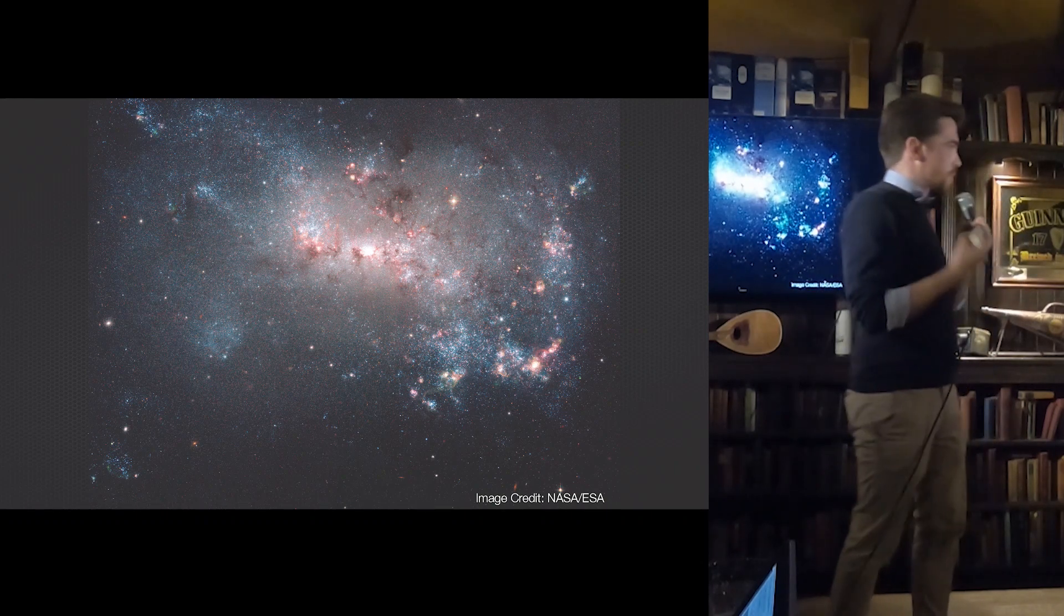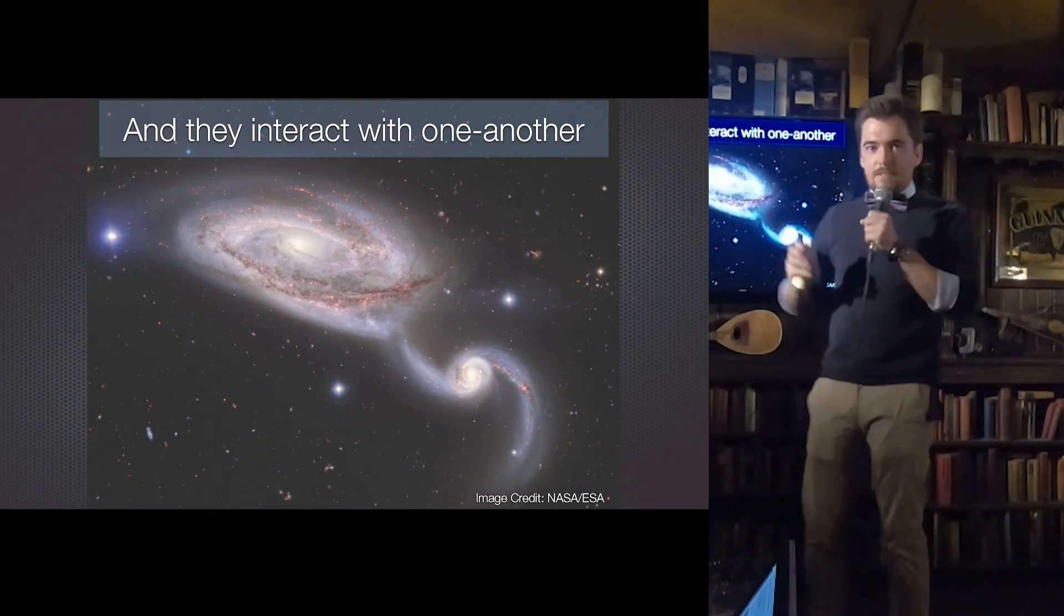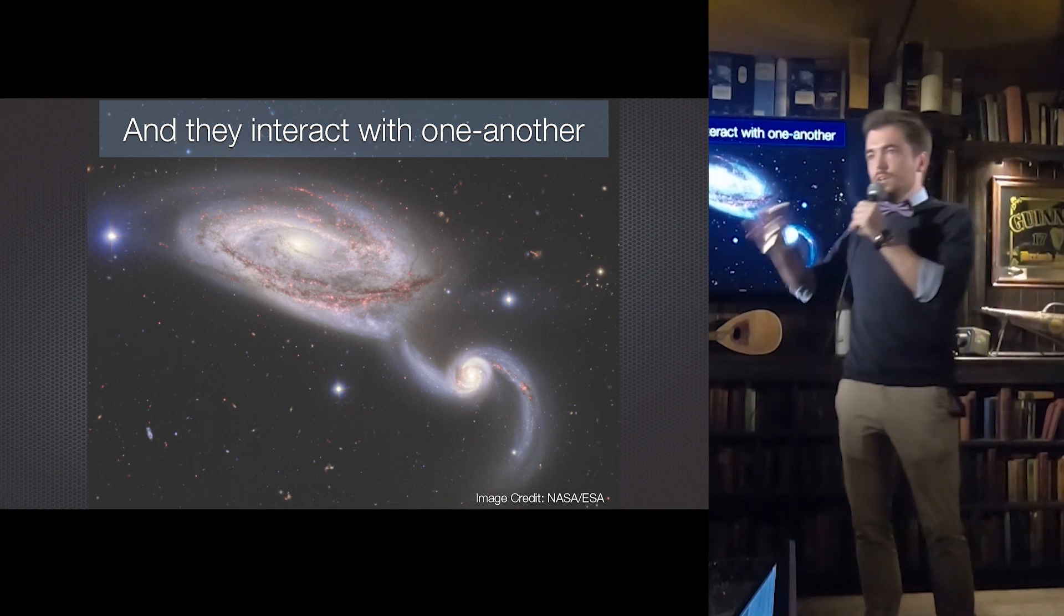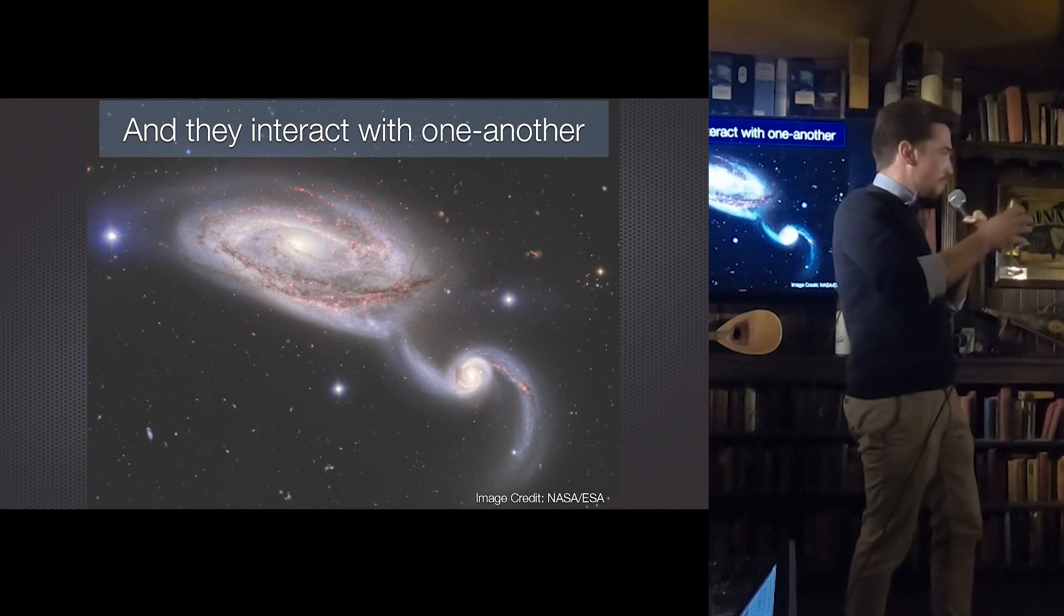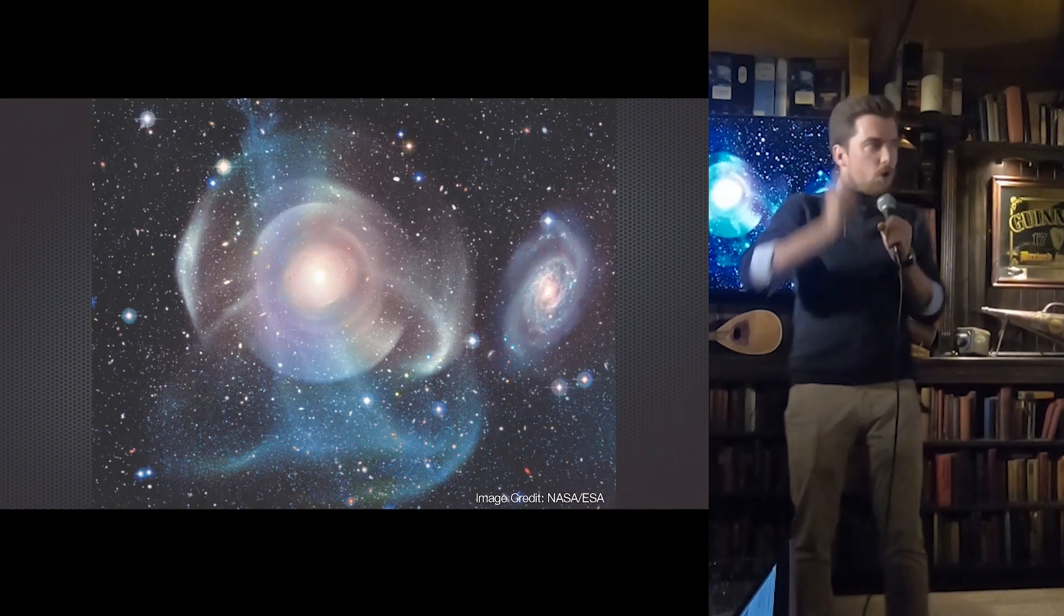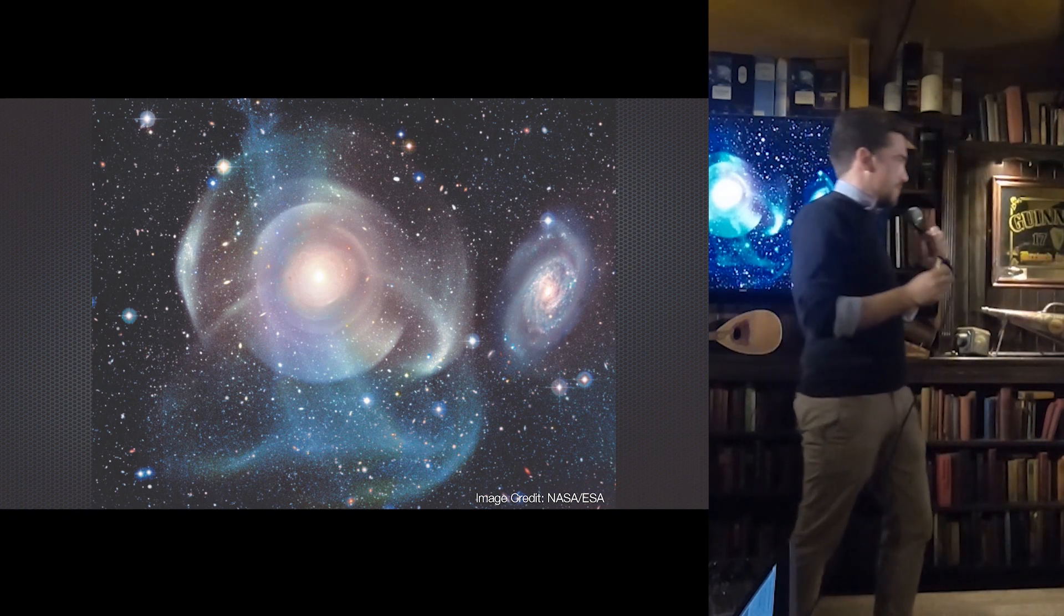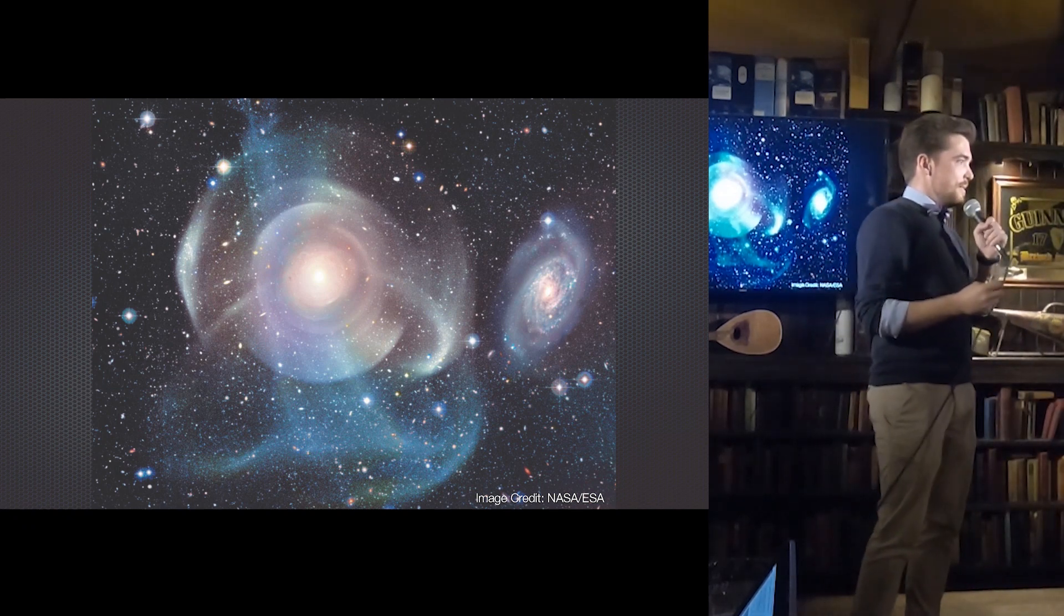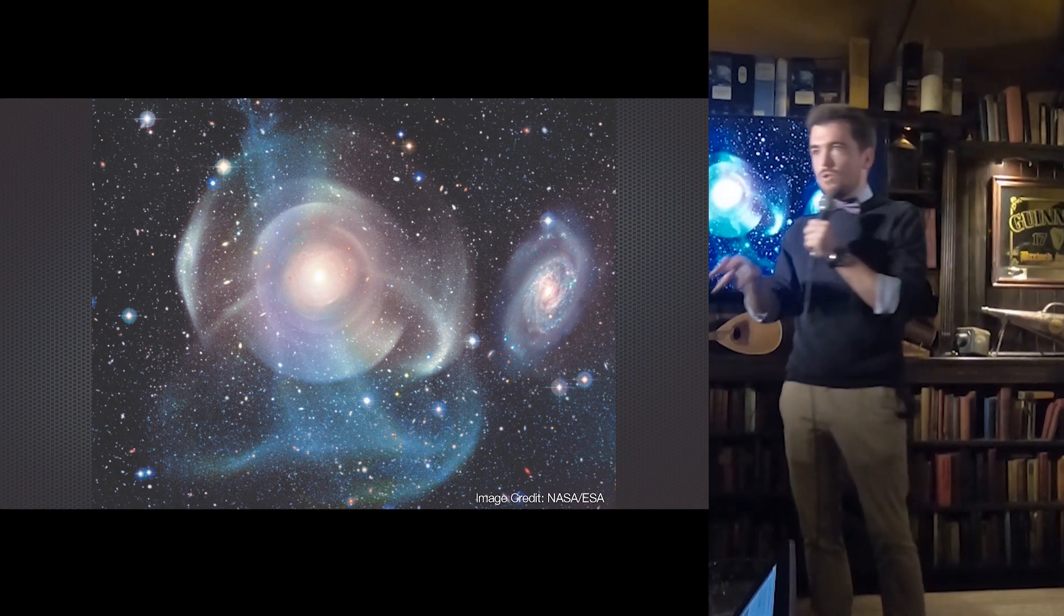And it's important to realize that not only do we have this diverse array of galaxies, this diverse sort of spectrum of different types of shapes, all of these things are constantly interacting with one another. They're all sort of bumping into one another and swirling around one another. Some of them are interacting so violently that the galaxies cease to look like galaxies at all and you end up with these sort of onion ring structures.